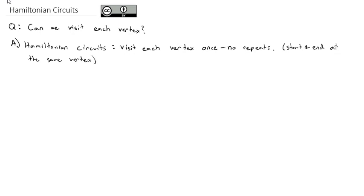The problem with Hamiltonian circuits is that there is no simple algorithm to find the best option.